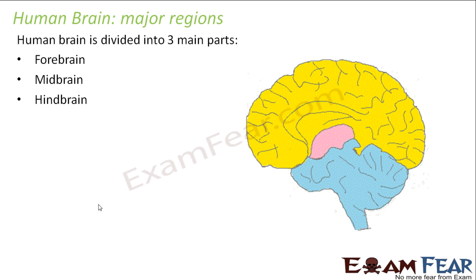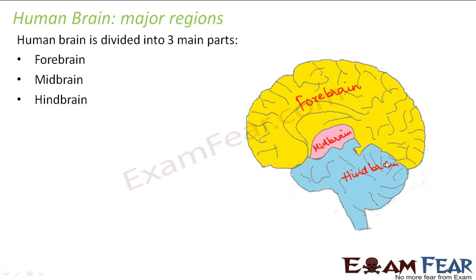This is how the human brain looks like. The yellow colored part is the forebrain. The midbrain — the name itself means middle — is in the center. And then we have the hindbrain. These are the three major sections. In each of these sections we have different areas which perform specific functions, and we will study that in the next few slides.